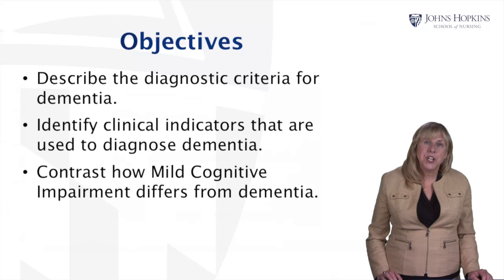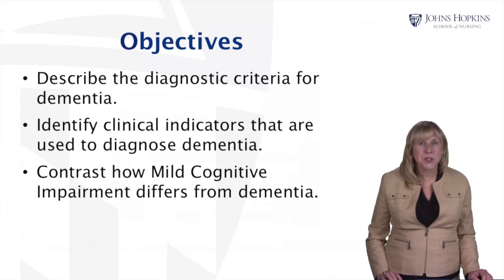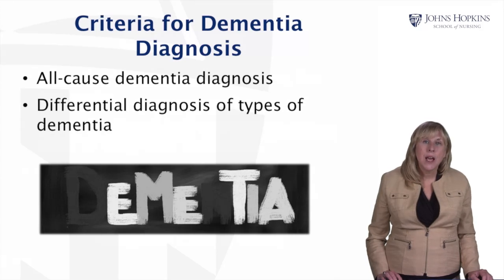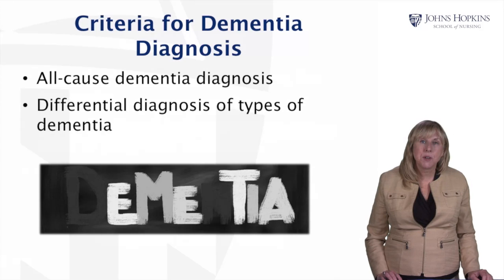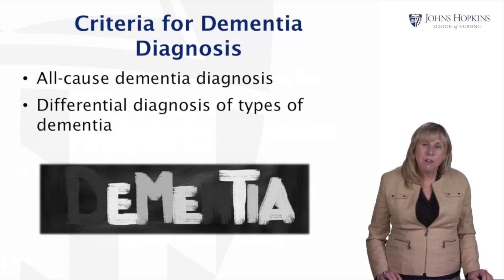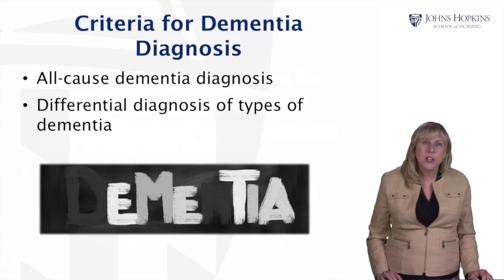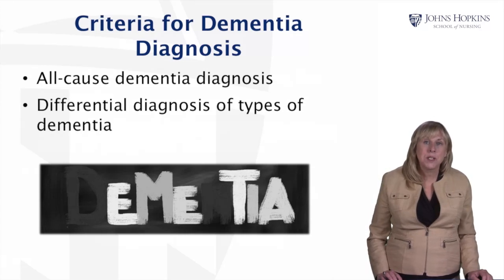These diagnostic criteria were originally developed in 1984 and recently revised in 2011. We'll consider all-cause dementia diagnosis because there's increasing recognition that many individuals have a mixed form of dementia — they may have Alzheimer's disease but also have cardiovascular changes that contribute to a vascular form of dementia. We'll also think about differential diagnosis for these different types of dementia and how they look a little bit different at presentation.